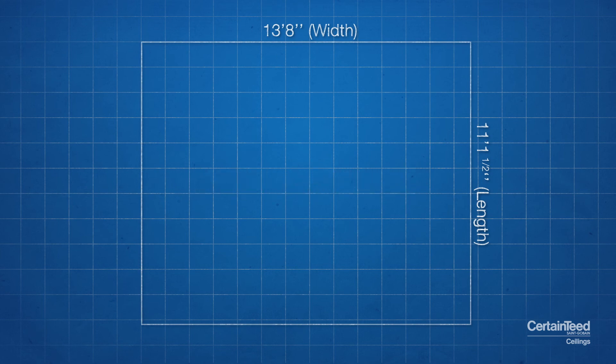Once the room is drawn on paper, draw the direction of the floor joist. This can be done by simply drawing a line with two arrows.